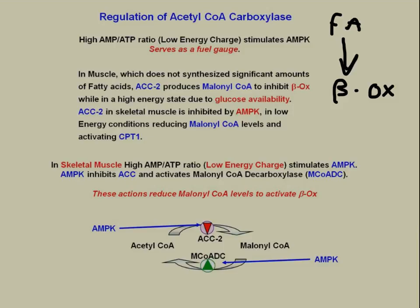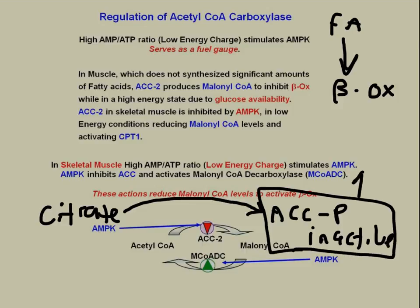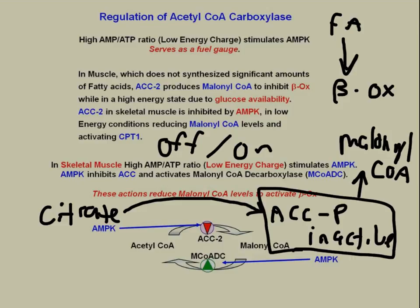Even though most cells may be in a low-energy or starvation state where beta-oxidation needs to be happening, some individual cells may still be high on energy and will have high levels of citrate in the cytosol. When ACC is in the phosphorylated — meaning inactive — state, high enough levels of citrate can even overcome inactivated ACC and cause it to start producing more malonyl-CoA. This illustrates how no enzyme is ever completely off or on — they are simply upregulated or downregulated.